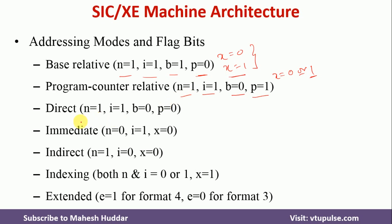If the value of N equals 1, I equals 1, and both B and P are 0, this is called direct addressing mode. At the same time, if the value of X equals 1, it will become indexed. We will discuss that separately.